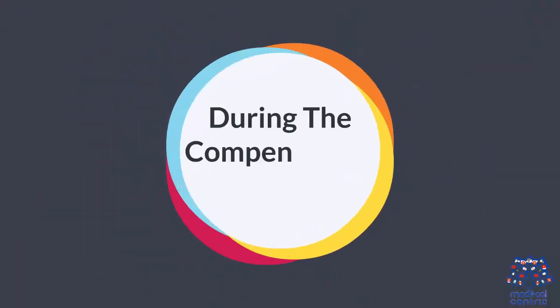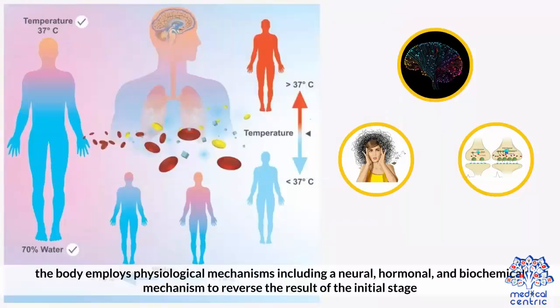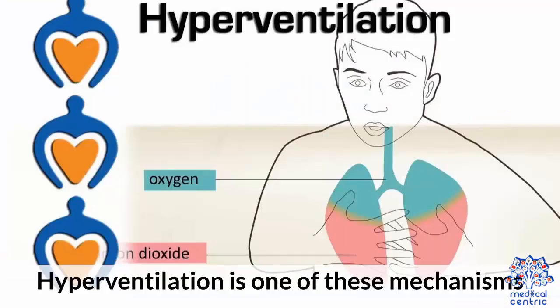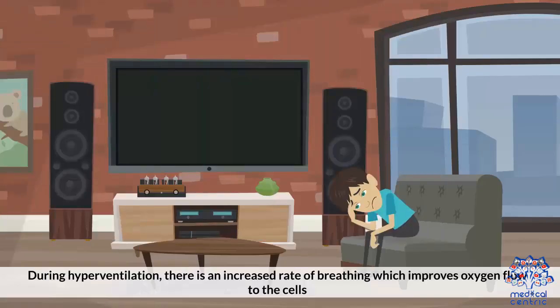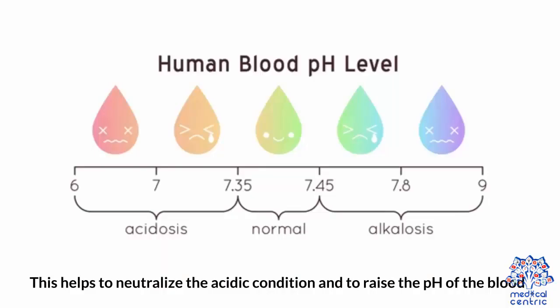During the compensatory stage, the body employs physiological mechanisms including neural, hormonal, and biochemical mechanisms to reverse the result of the initial stage. Hyperventilation is one of these mechanisms. During hyperventilation, there is an increased rate of breathing which improves oxygen flow to the cells. This helps to neutralize the acidic condition and raise the pH of the blood.